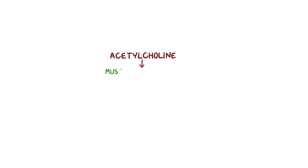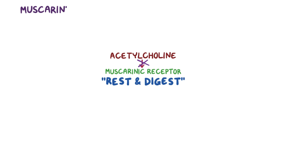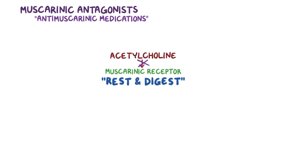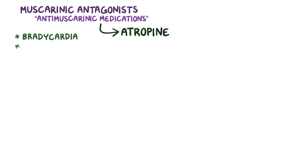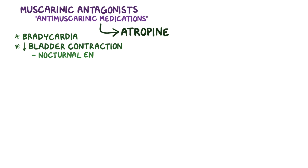Medications that block the effects of acetylcholine on muscarinic receptors are called muscarinic antagonists, or anti-muscarinic medications. The most famous muscarinic antagonist is atropine. Atropine blocks the rest and digest effect from the parasympathetic system, so clinically it can be used to treat bradycardia, or slowed heart rate. It also decreases bladder smooth muscle contraction, making it useful for preventing nocturnal enuresis, or bedwetting, in children.